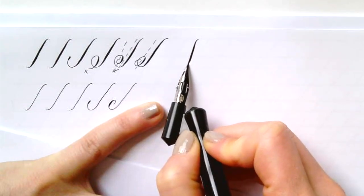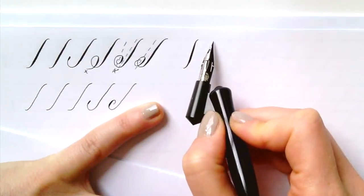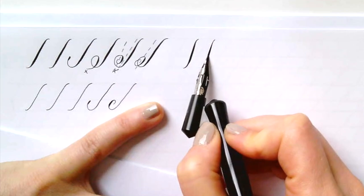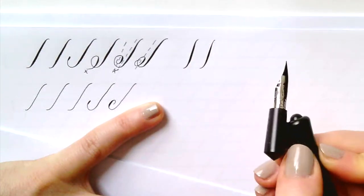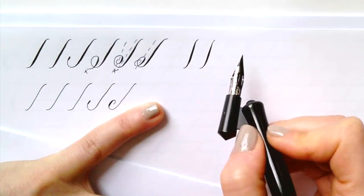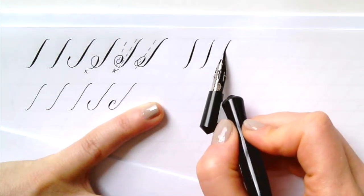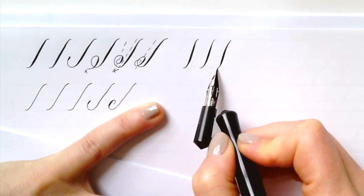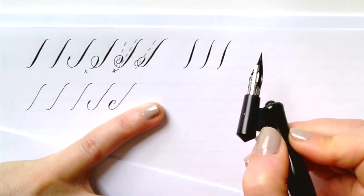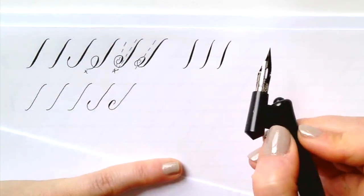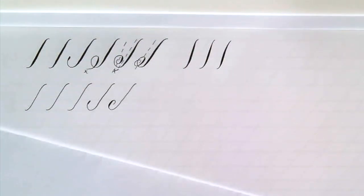The next shape is going to be another dynamic downstroke, so starting light, increasing pressure in the center, and then finishing light again. But this one is going to be a little more vertical. This one is not going to follow the slant line so much because this is the line that we're going to need for our Vs, our Ws, and our Ns, and I'm going to explain why that is when we get to those letters.